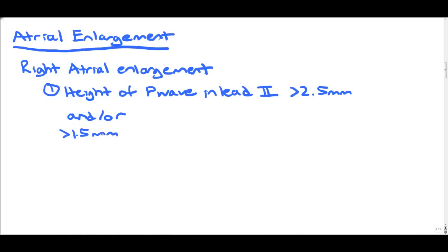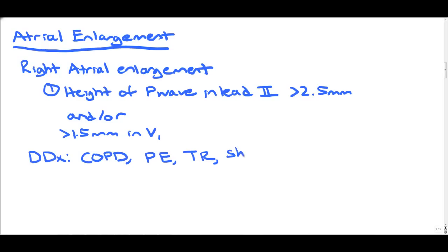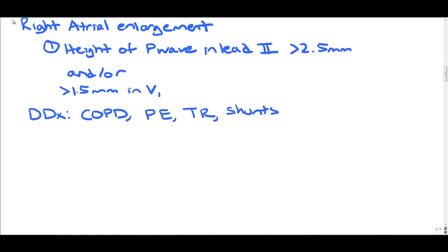When you do have right atrial enlargement, think of COPD — increased pulmonary pressures cause back flow into the right side of the heart, enlarging the right atrium. Similarly, PEs and any lung disease increase pressures on the right side causing enlargement. Shunts increase blood flow to the right side. Tricuspid regurgitation causes back flow into the right atrium during ventricular systole, when blood should be going to the lungs.